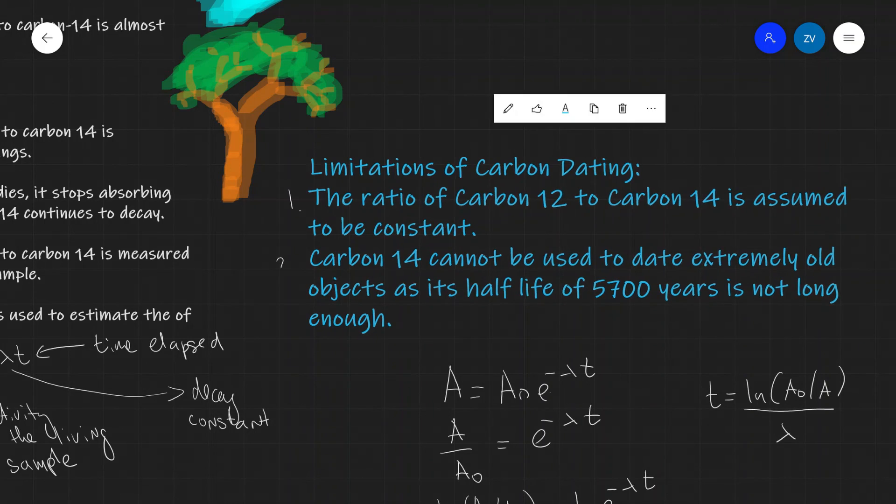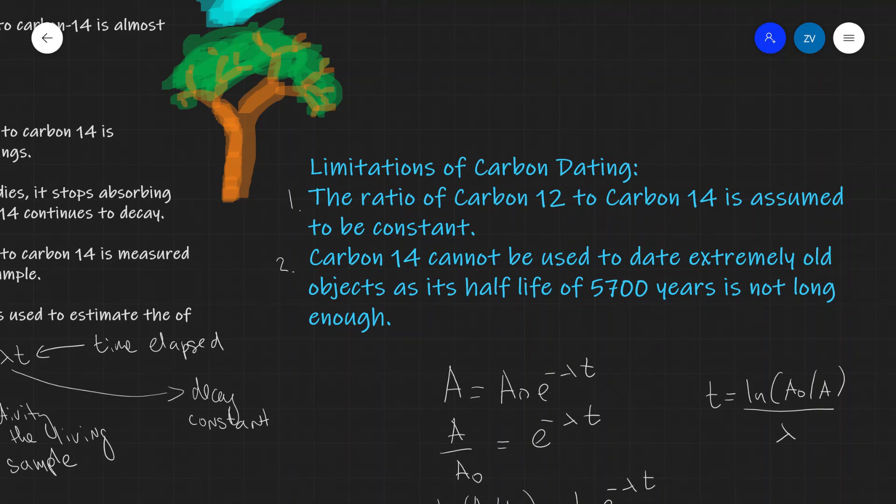Our second limitation is that because carbon-14 has a half-life of around 5,700 years, it cannot be used to date extremely old objects—millions of years old. The reason is simply that the half-life of carbon-14 is not long enough.